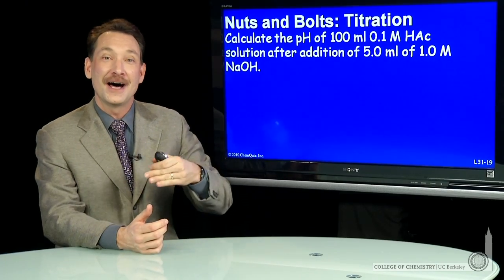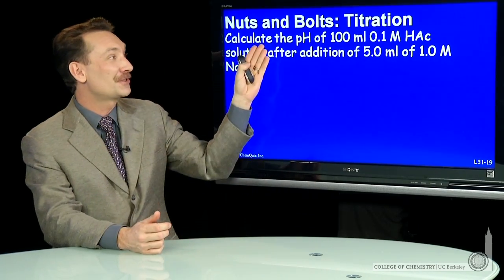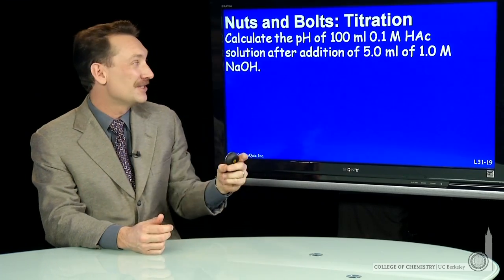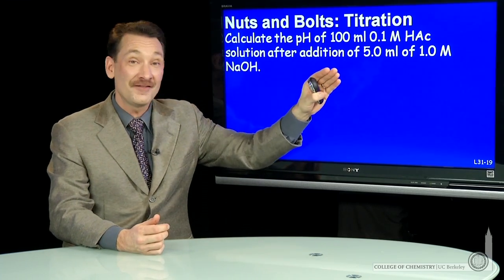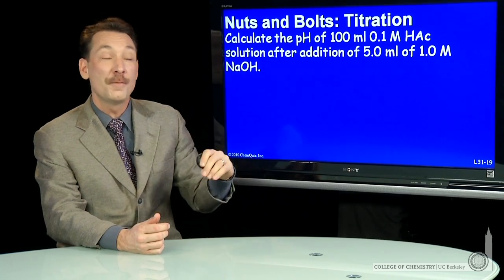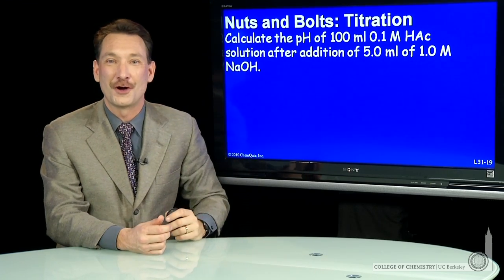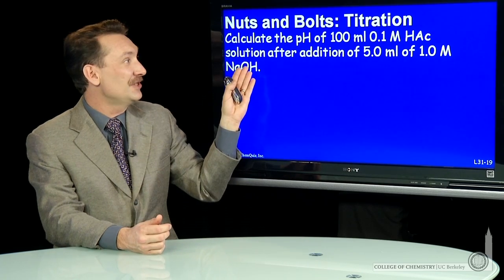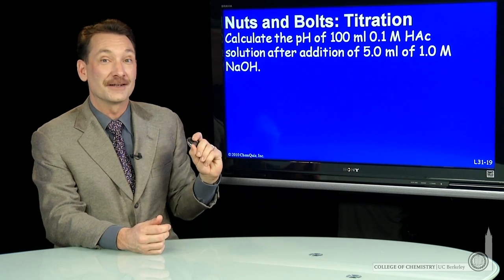Let's do a titration calculation. We'll start with 100 milliliters of 0.1 molar acetic acid, HAc, and add 5 milliliters of a strong base solution, 0.1 molar sodium hydroxide. The question is, what is the pH after those two are mixed?